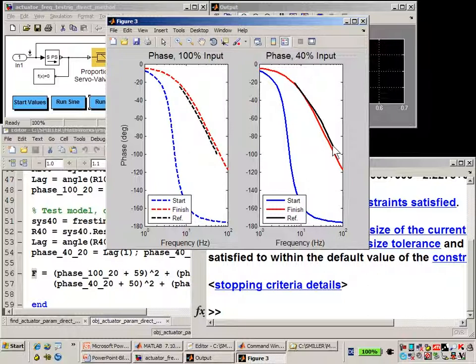We could improve this optimization further by including more points. And if we still can't get it close, we could improve our model, adjusting it to include more detail.